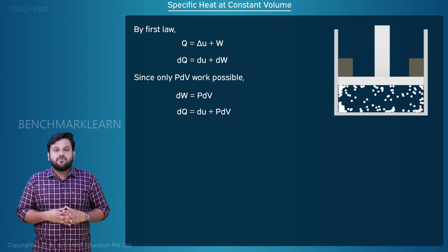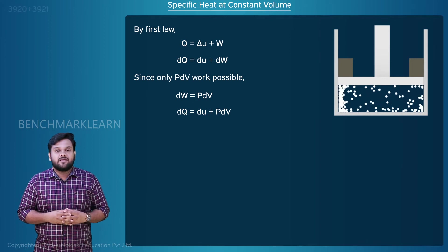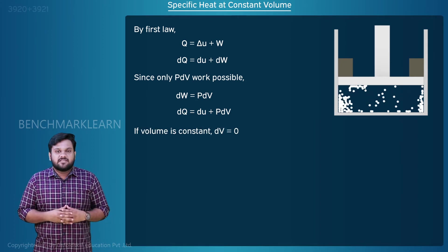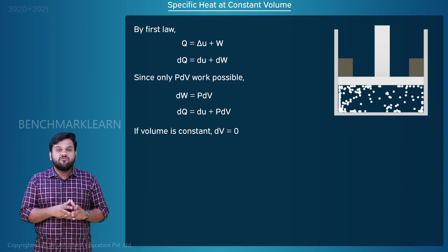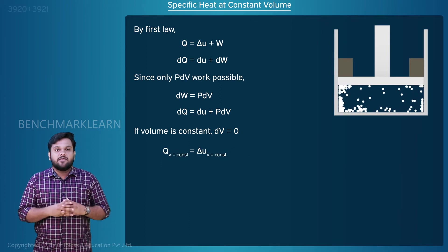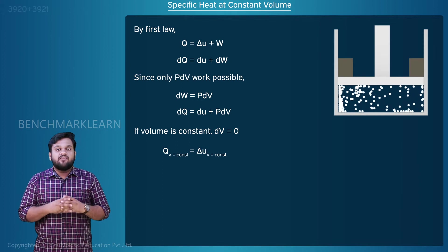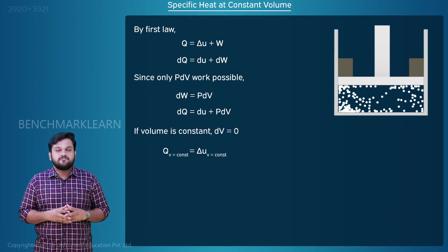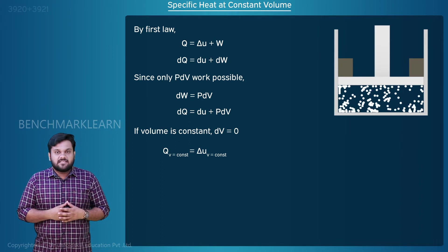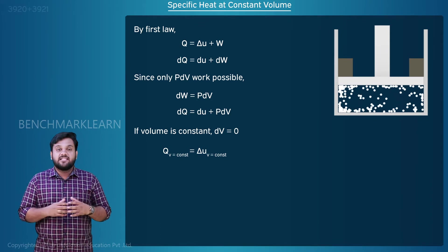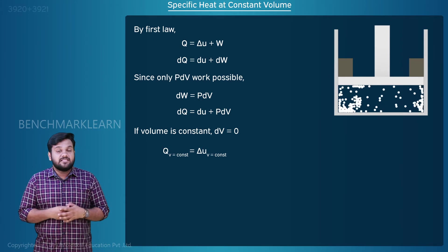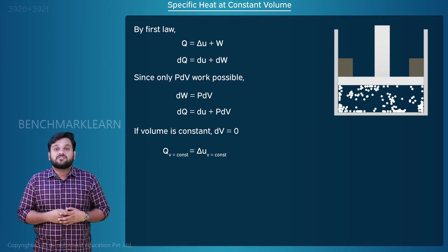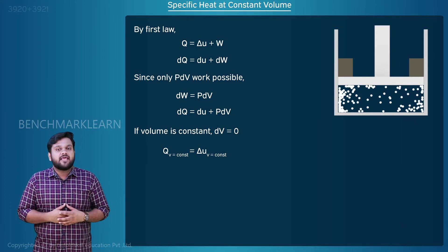dQ is equal to du plus PdV. If volume is constant, dV is equal to 0. So we get Q_V at constant is equal to delta U at V equal to constant. Since volume of gas is held constant, the heat supplied cannot be used for doing PdV work. Instead, it is utilized for changing only the internal energy of the gas.